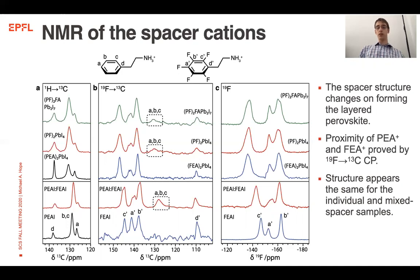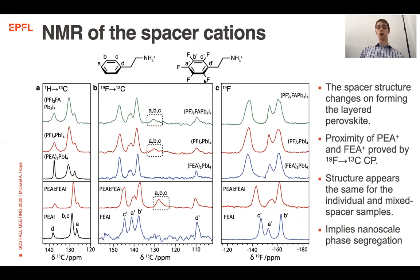In order to reconcile these two points, we propose nanoscale phase segregation of protonated and fluorinated regions — but on the nanoscale, so that we still get atomic contact.